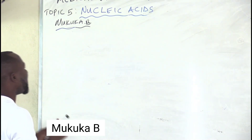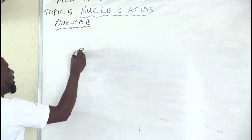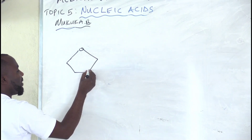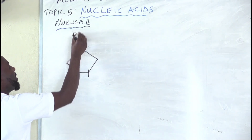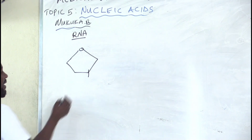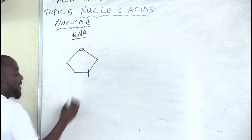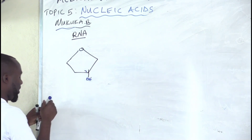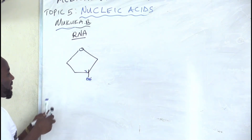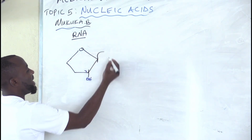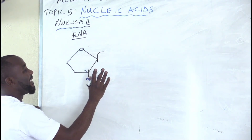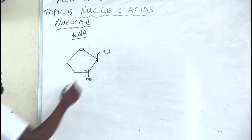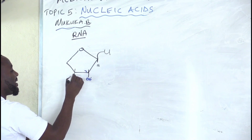A nucleotide is made up of a sugar. Because we are making RNA, we attach OH on carbon number two — that's what distinguishes ribose sugar. We can use any base other than thymine, so we can even use uracil because uracil is used in RNA.